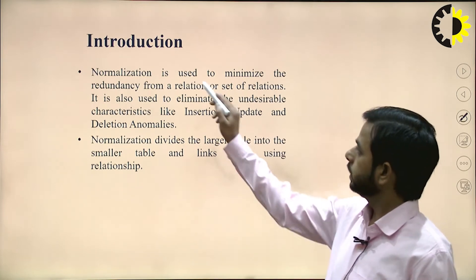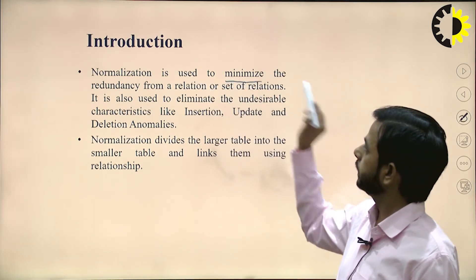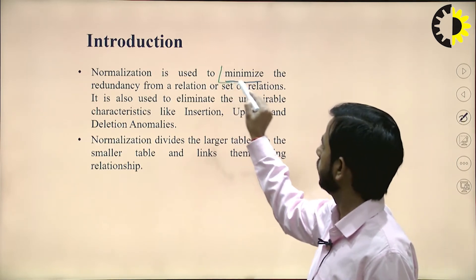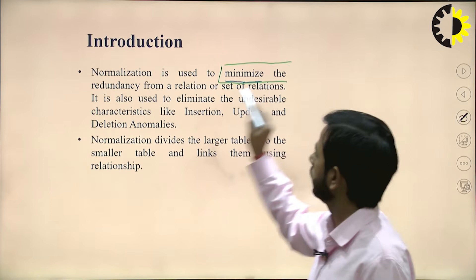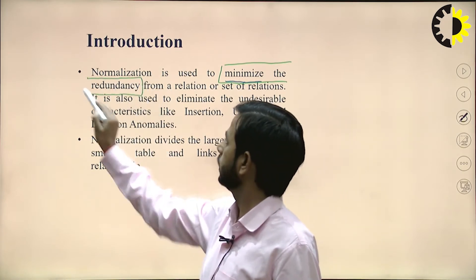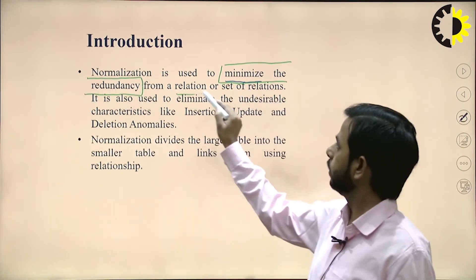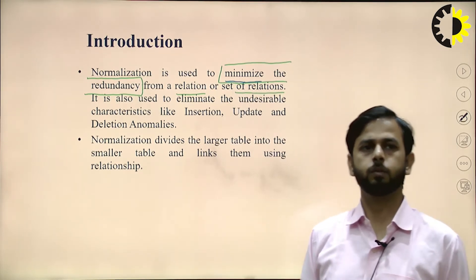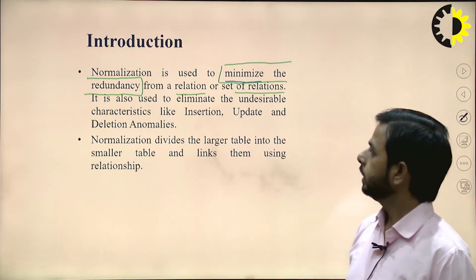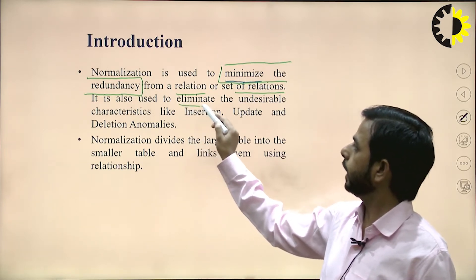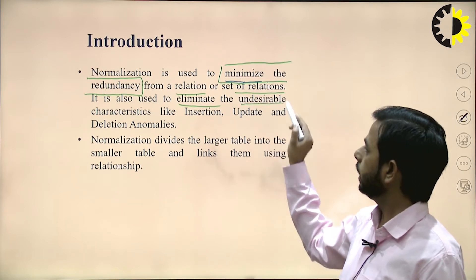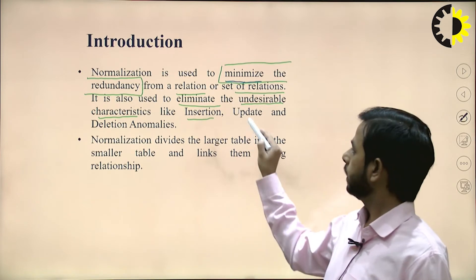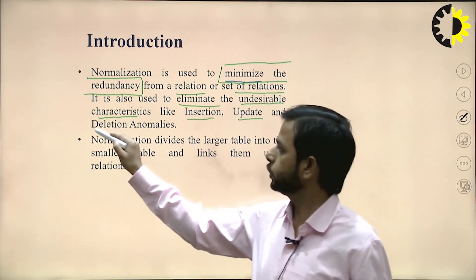Normalization is used to minimize the redundancy from a relation, or set of relations, or you can say minimize the redundancy from the database. It is also used to eliminate undesirable characteristics like insertion, update, and deletion anomalies.